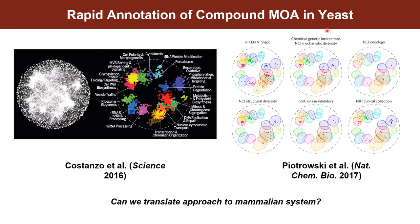Previous work in the Myers lab has leveraged these ideas in yeast, which is a tractable model system for building out these genetic interaction profiles. You see here on the left, collapsing those profiles into a genetic interaction network and then binning each of these query genes into biological function processes. And then on the right, this paper took six large compound collections and employed the idea of integrating CGI and GI profiles to rapidly annotate the biological functions of these compounds.